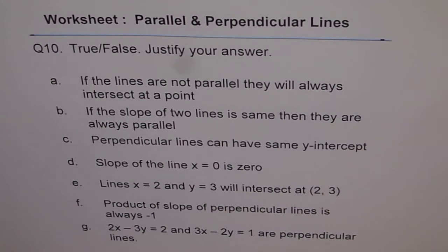D. Slope of the line x equals to 0 is 0. E. Lines x equals to 2 and y equals to 3 will intersect at 2,3.